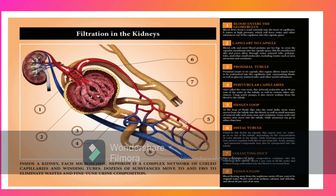The kidneys filter much more fluid than the amount of urine actually excreted, about 1.5 liters per day. This is essential for the kidneys to rapidly remove waste and toxins from the plasma efficiently.